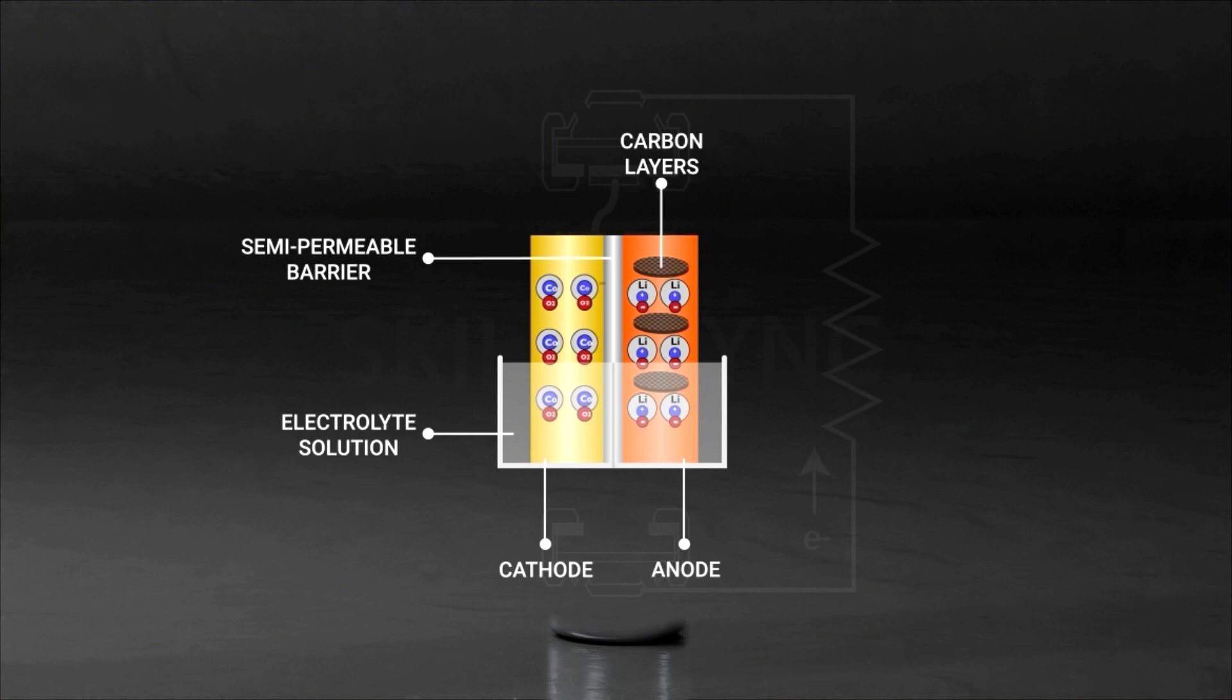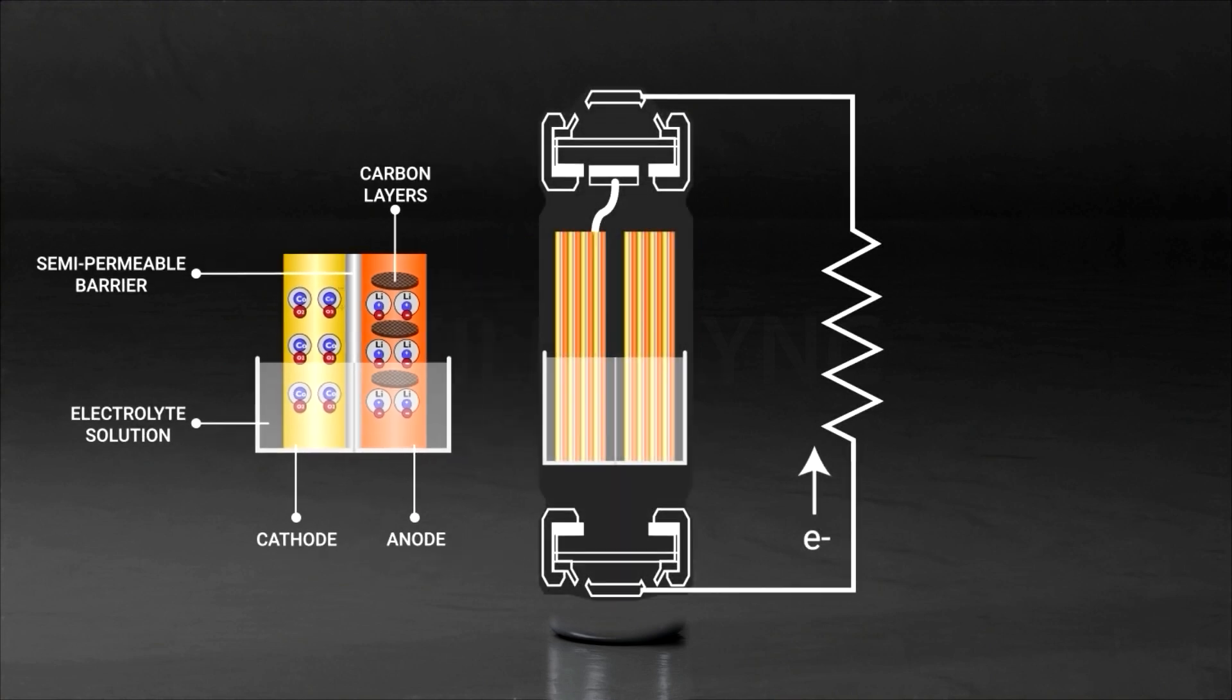The cobalt oxide in the cathode lacks one electron and makes it unstable. When the circuit is closed, the electron from lithium in the anode is pulled towards the cobalt oxide in the cathode to make it stable.